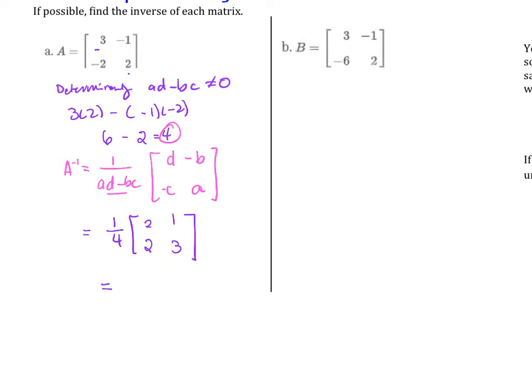To finish it out, we distribute the 1 fourth inside. So this is 1 half, 1 fourth, 1 half, and 3 fourths. This is the inverse matrix, so very fast to find.